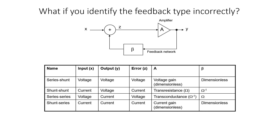In this video, I would like to look in particular at the shunt-shunt configuration. What would happen if you were to look at a circuit and identify the feedback type incorrectly? For example, if you thought it was shunt-shunt feedback when it was actually series-series. If you were to identify the type of feedback incorrectly, then you would likely have difficulties writing the feedback in this standard form.